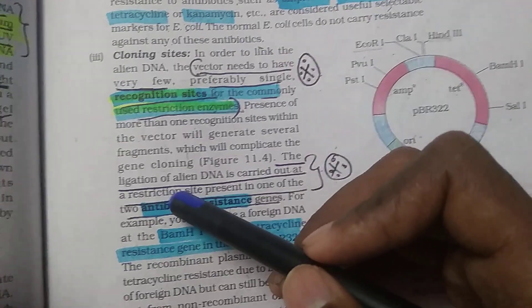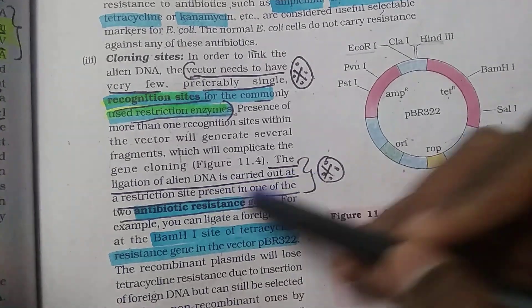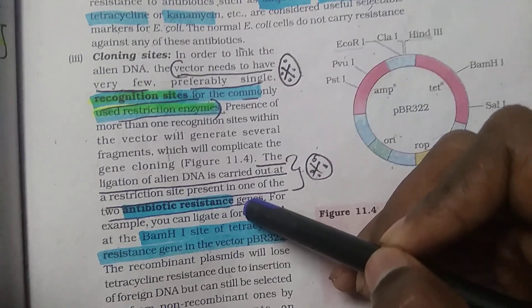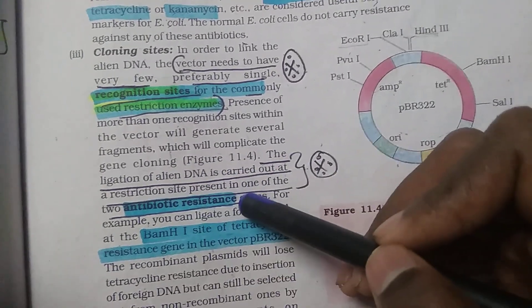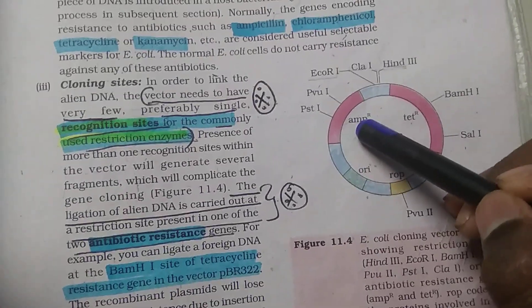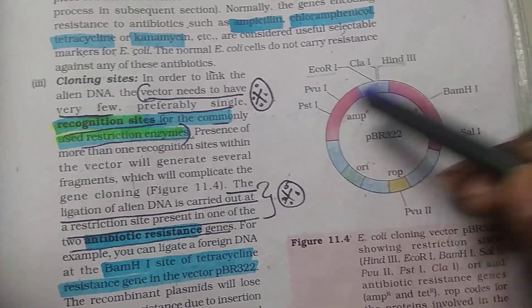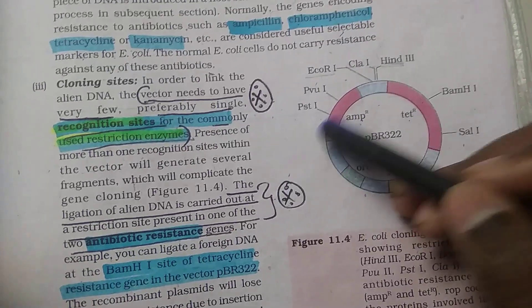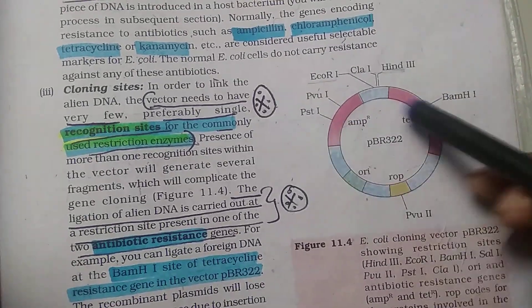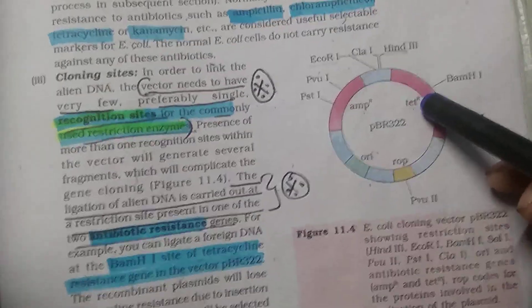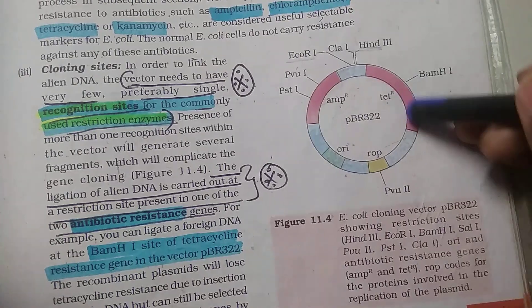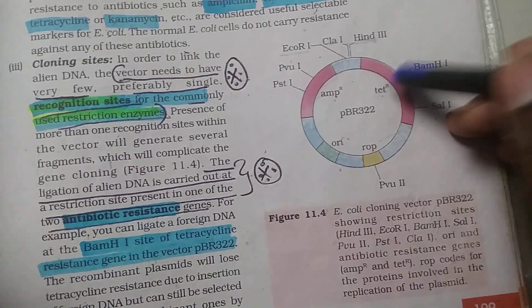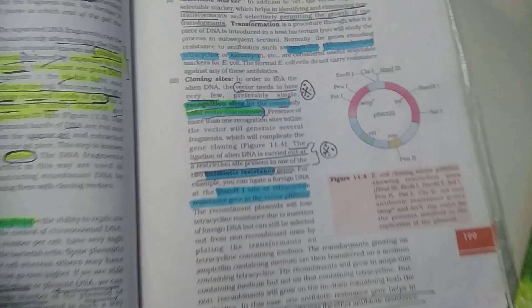Insertion of DNA is carried out at the restriction site present in one of the two antibiotic resistance genes. The DNA insertion is carried out as insertions. We're talking about ampicillin resistance gene recognition site and tetracycline recognition site.